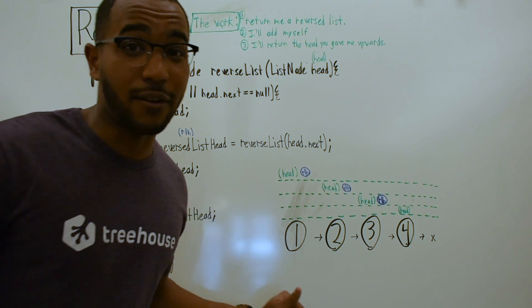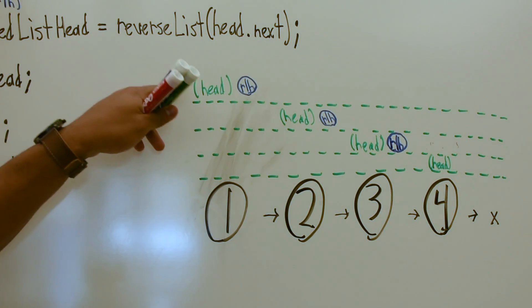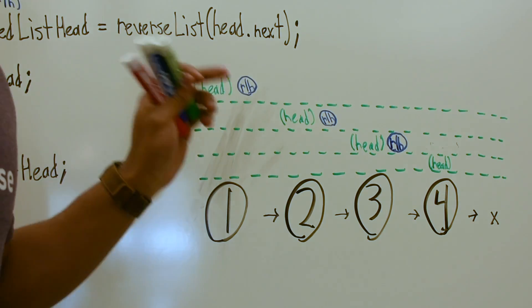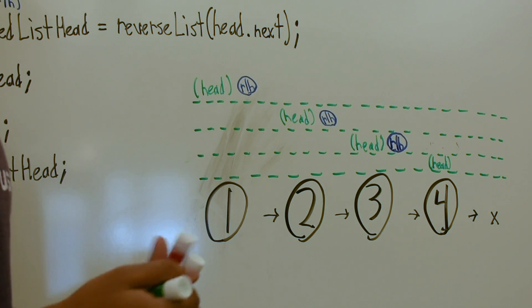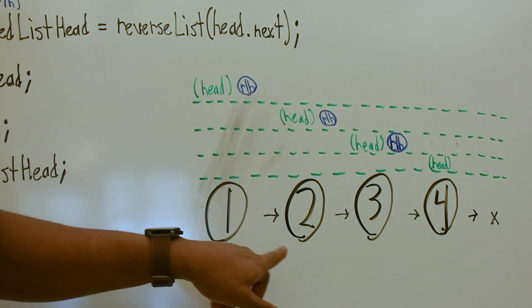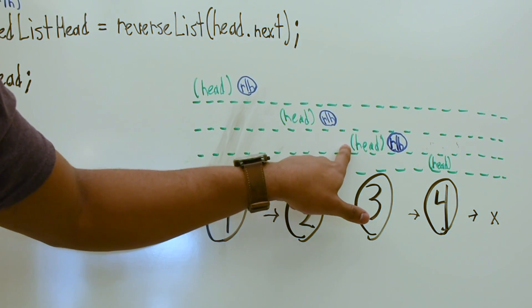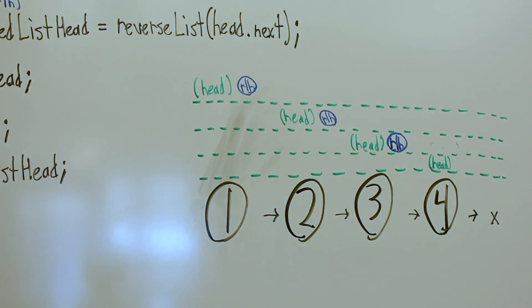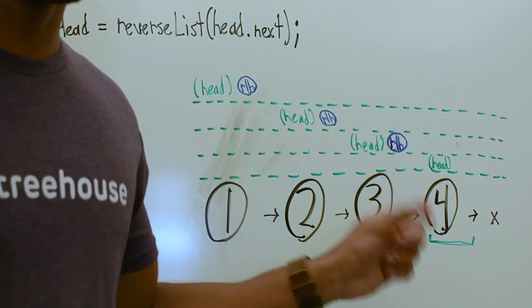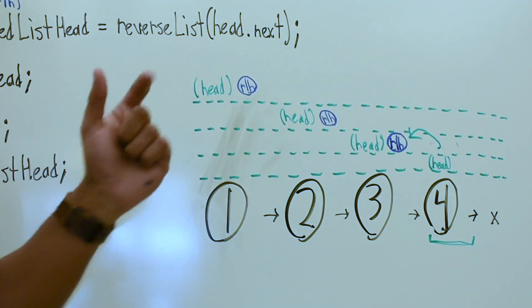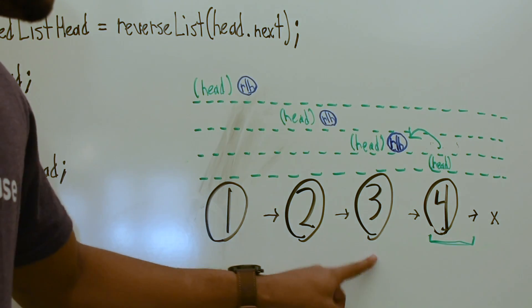Each of these frames represents a stack frame in our recursion, so we start at the top. Our head node is at the list head — this is what's passed into the function as head. RLH means reverse list head — this is the head of the reverse list, what's going to be returned to us upwards; we don't know this yet. So we call the function again with the next node — that next node is now the head in its current stack frame. We keep calling down: this is the head in this stack frame, reverse the rest. And we reach our base case when we have one node — this is when we say this is a reversed list and we can return upwards. The reverse list head is here.